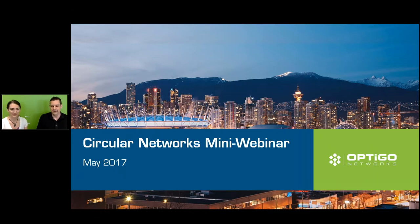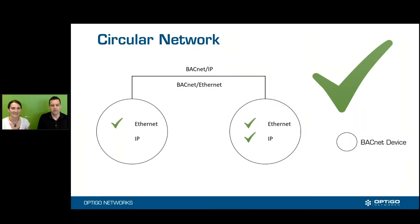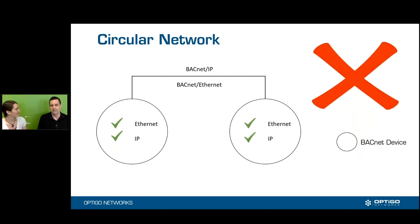A circular network — they're a nasty little thing when they come up. I'll show you quickly on the screen what it looks like. This obviously is not a circular network. This is something where one controller is doing the routing between IP and Ethernet, and the other one is either IP or Ethernet. Where you get into trouble is when you have both of those checked on two controllers, meaning there's a path going from each controller on Ethernet and the same path on IP. That's a bad thing.